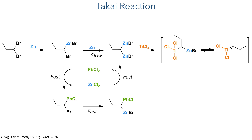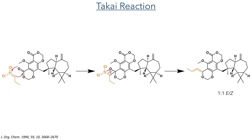It is this compound that then reacts with titanium tetrachloride, which first undergoes transmetallation with one of the zinc moieties. Following this, the other zinc bromide is eliminated, forming a geminal carbon dianion. This species can undergo a [2+2] cycloaddition with one of the esters present in the molecule, in a mechanism similar to the Wittig reaction. The oxo-titanacycle ring then undergoes a cycloreversion, generating the desired alkene in a 1-to-1 mixture of E and Z isomers.